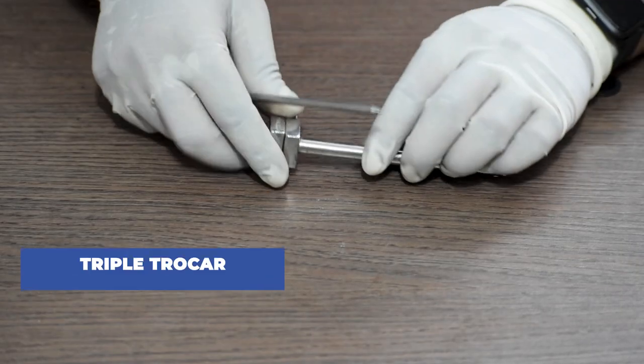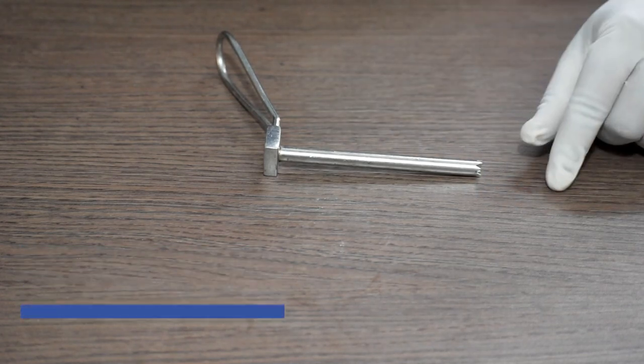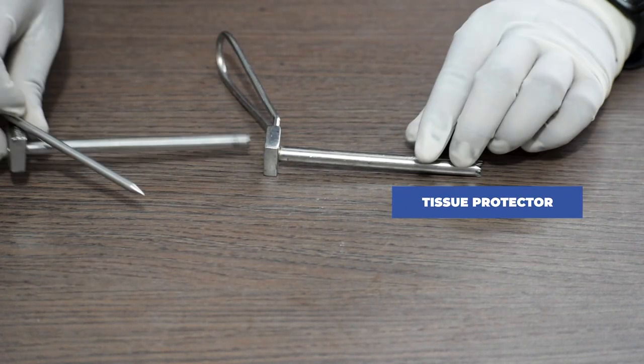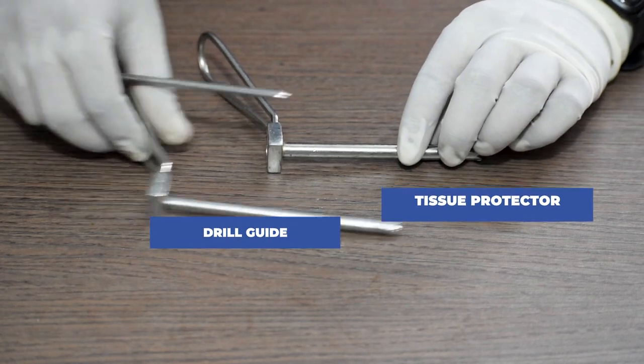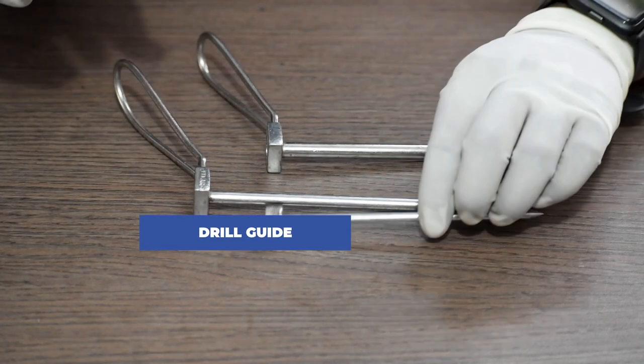To start with, we will first take the triple trucker. It has got three components. This one is the protection sleeve that guards the soft tissues. This one is the drill guide and this is the trucker.